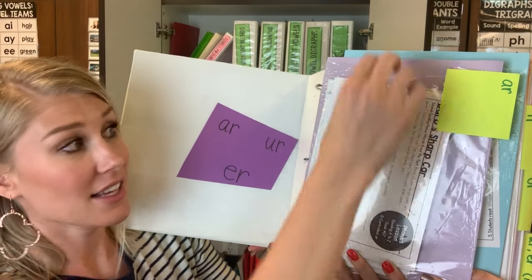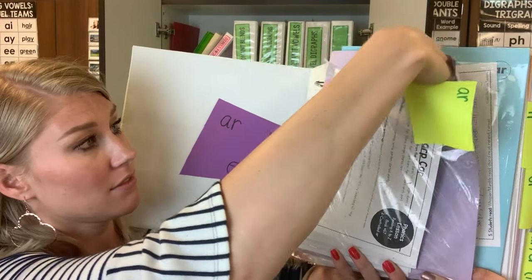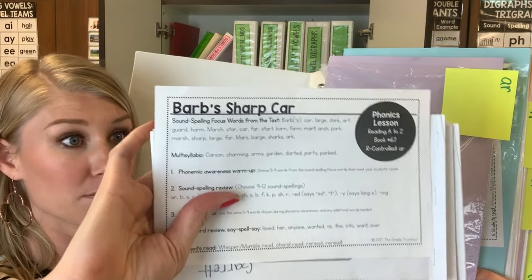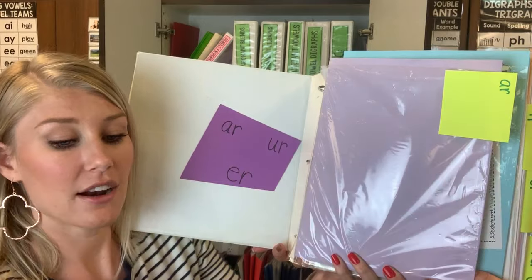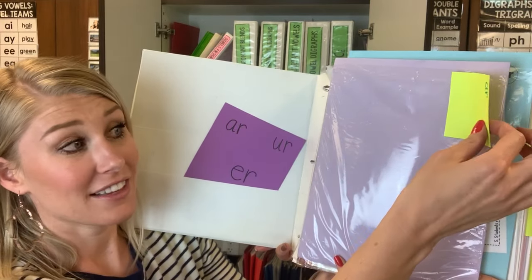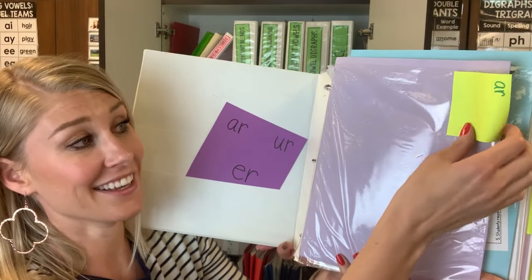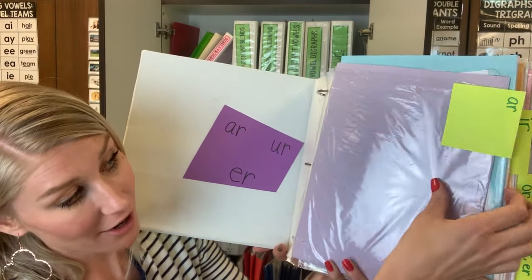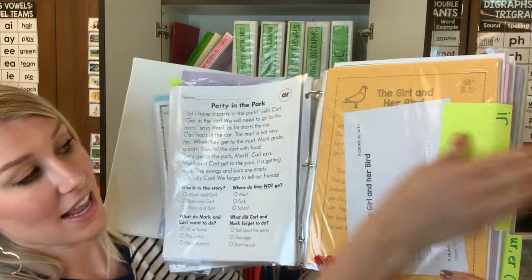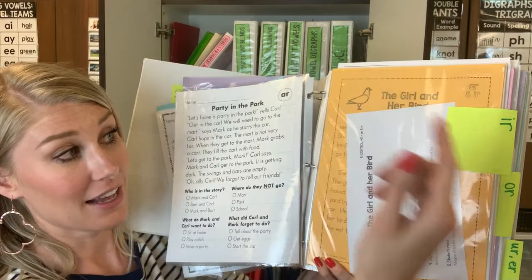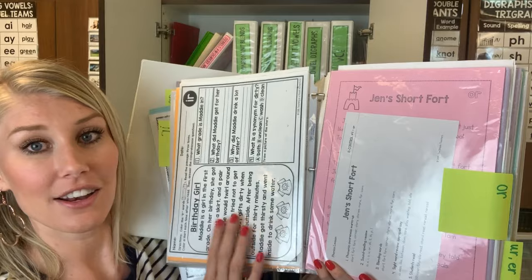I have my text in little page protectors. Here's a Reading A to Z text — 'Barb Sharp Car.' I have my lesson right there and the text is directly behind it. I just have a sticky note labeling the section for AR spelling, then the next sticky note is the section for IR spelling, with the text that follows that, and then OR and so on.